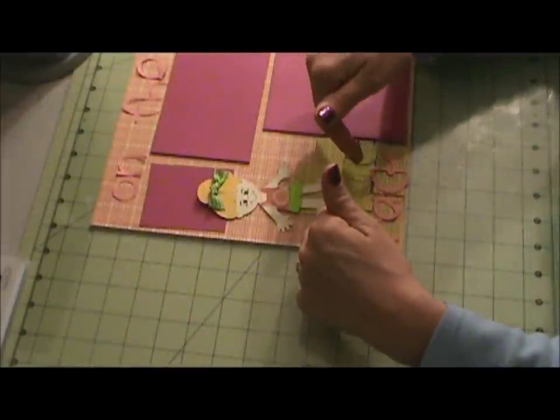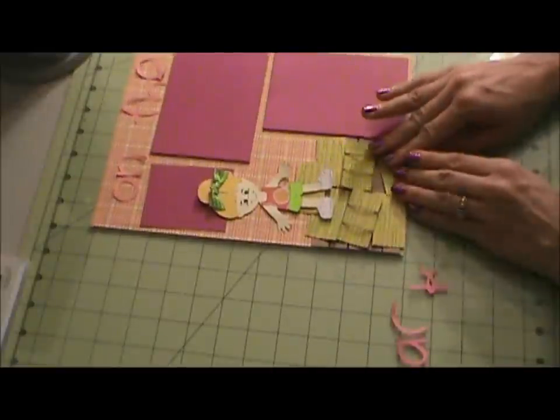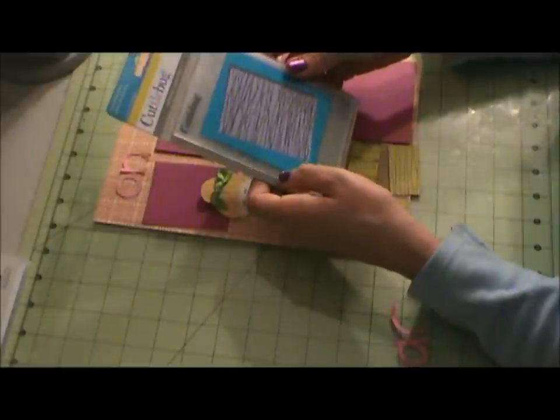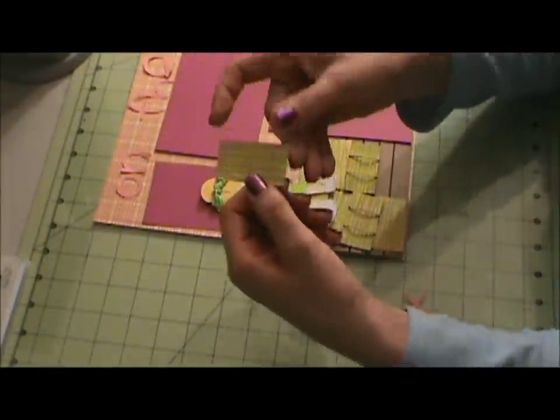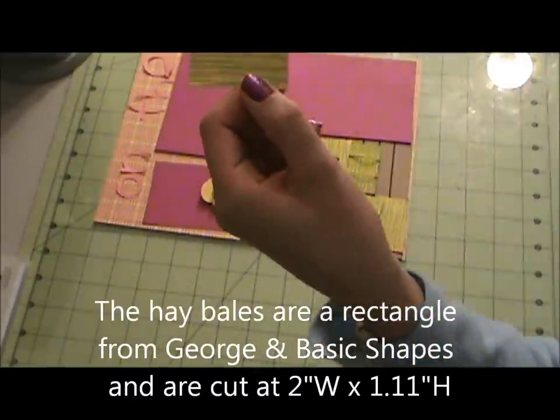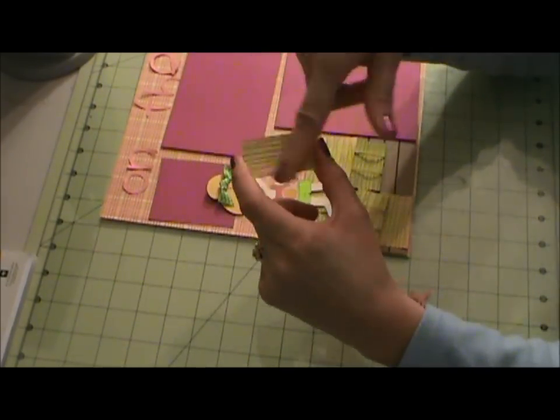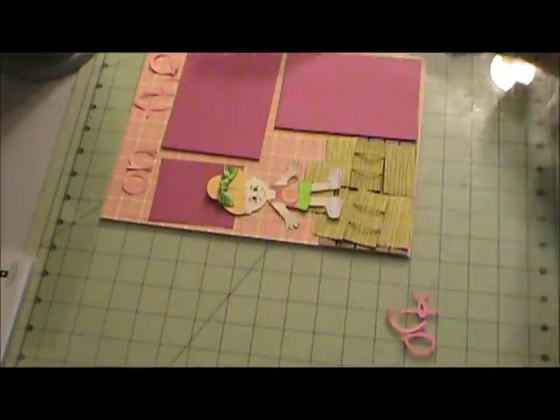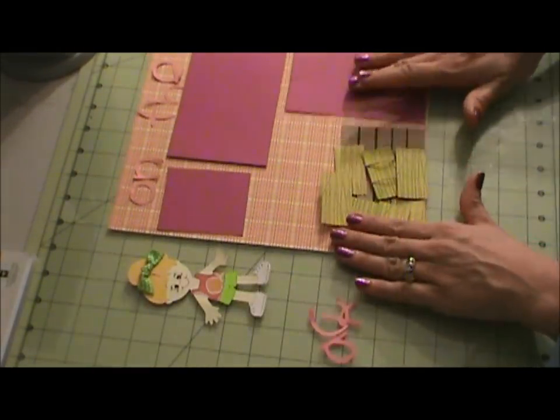I'm going to glue my hay bales now. I did take the branches and I used that to emboss my hay bales so hopefully it will look good. Then I took some green ink and a foam square and I inked on here.